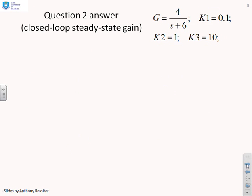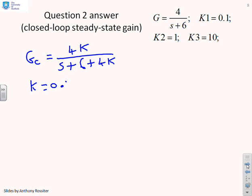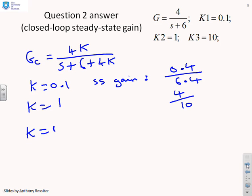Next then, what about steady state gain? Well, let's just remind you of what we had. The closed loop transfer function was 4k over s plus 6 plus 4k. So if k equals 0.1, then the steady state gain is going to be 0.4 over 6.4. If k equals 1, then the steady state gain will be 4 over 10. And if k equals 10, the steady state gain will be 40 over 46.